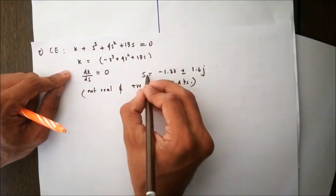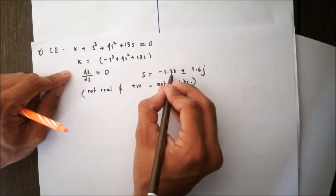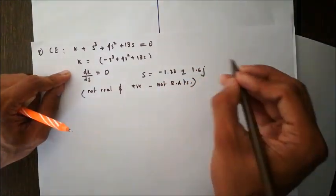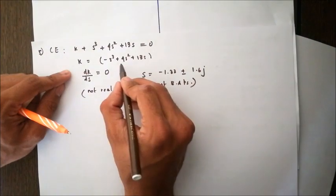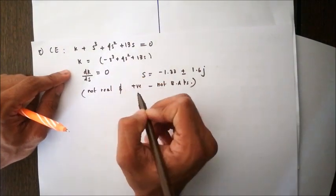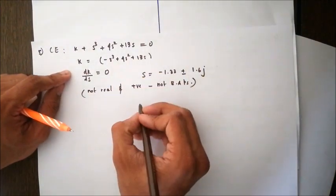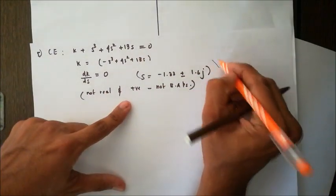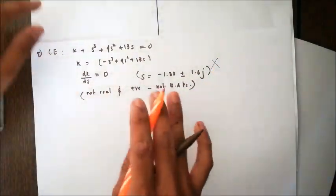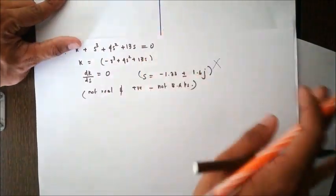If it is not real and positive, it's not a breakaway point. Here, both values s = -1.33 + 1.6j and s = -1.33 - 1.6j, when substituted in the equation for k, do not give a real and positive value. So these are not breakaway points. This particular question has no breakaway point.